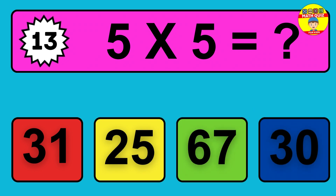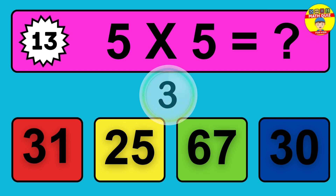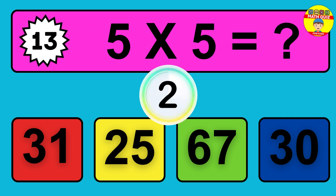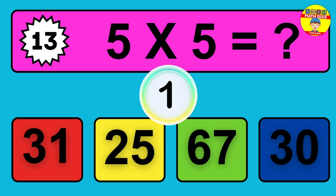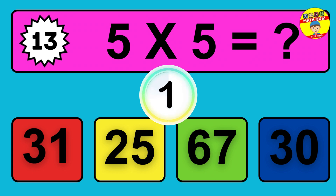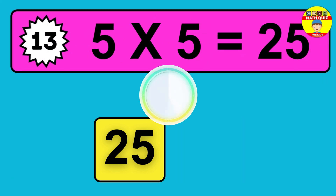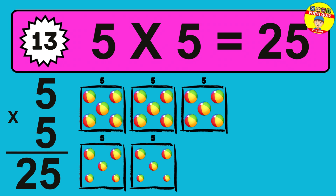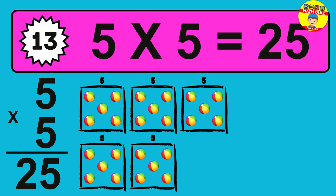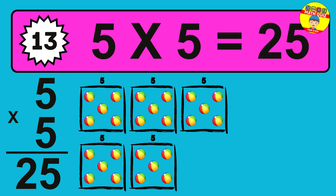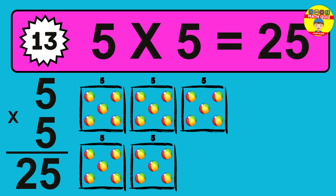Question 13. 5 times 5 equals what? So the answer is 5 times 5 is 25. So how many balls do we have? 25 balls.